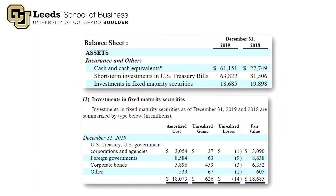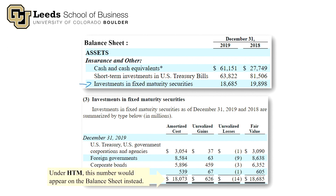For held to maturity securities, the investment account on the balance sheet should be held at cost, not fair value. Under HTM accounting, the $18,073 million cost figure — not the $18,685 million fair value — would be reflected on the balance sheet. There would be no recognition of unrealized gains and losses; we completely ignore them because we don't plan on selling — we plan on holding the security until its maturity.